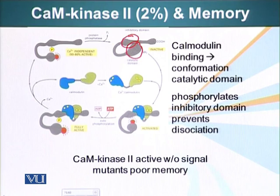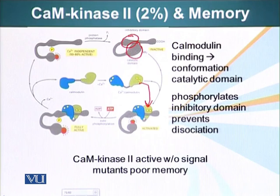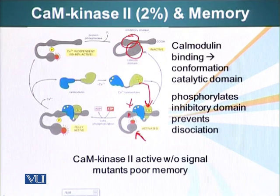When calmodulin becomes activated, it binds four calcium ions and subsequently binds CAM kinase 2. When it binds CAM kinase 2, the kinase undergoes a conformational change. It releases the inhibitory domain, freeing the catalytic domain. Once the catalytic domain is activated and released, the first thing it does is phosphorylate the inhibitory domain. When this phosphate group is attached to the inhibitory domain, the inhibitory domain cannot inhibit the function of the catalytic domain.